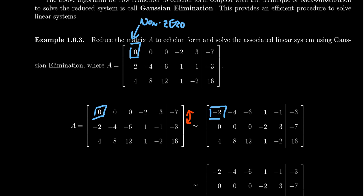Now that we have a non-zero entry in the pivot position, we want to zero out everything below it. We already have a zero in the second row — that's great. We don't have a zero in the third row, so that's our target. To cancel out a four using multiples of two, we take row three and add to it negative two times row one. Negative two times two gives negative four, and negative four plus four gives zero.